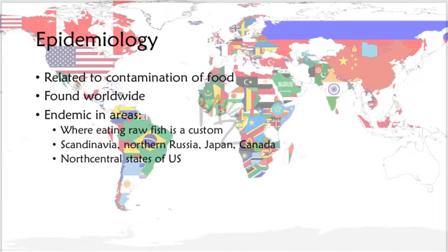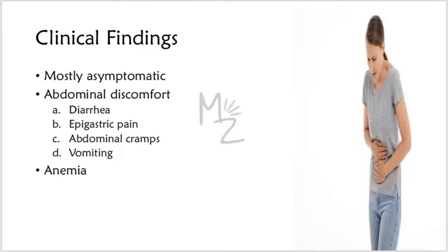Clinical findings: most patients are asymptomatic, but abdominal discomfort can occur due to diarrhea, epigastric pain, abdominal cramps, vomiting, and anemia. Signs of anemia such as pale color and fatigue will also be present.